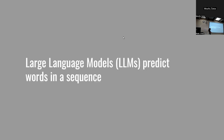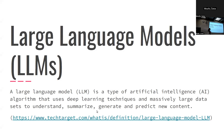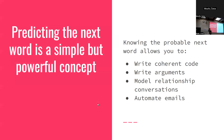The TL;DR take-home point: large language models predict words in a sequence. An LLM is a type of artificial intelligence algorithm that uses deep learning techniques and massively large datasets in order to understand, summarize, generate, and predict new content. Specifically I'll be talking about GPTs — ChatGPT, GPT-3, etc. Predicting the next word is a simple but very powerful concept: knowing the probable next word allows you to write coherent code, write arguments, model relationship conversations, automate emails — there's a lot you can do.